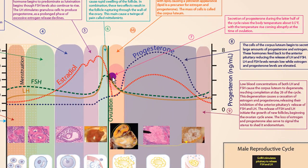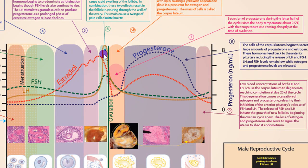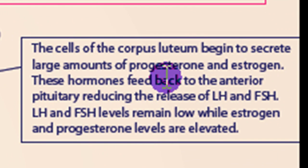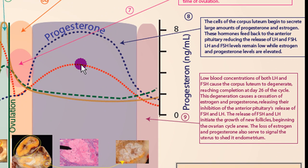That temperature rise still allows time for fertilization because the oocyte will survive for at least another 24 hours, although it will cut it a little close. A better method now is to use urine tests — urinalysis — that test for luteinizing hormone. This spike in LH causes an increase in LH in the urine that can be detected prior to ovulation, so reproduction can be attempted earlier rather than waiting for the temperature change. The corpus luteum then secretes large amounts of progesterone and estrogen, and those feed back to the anterior pituitary causing a decline in FSH and LH.